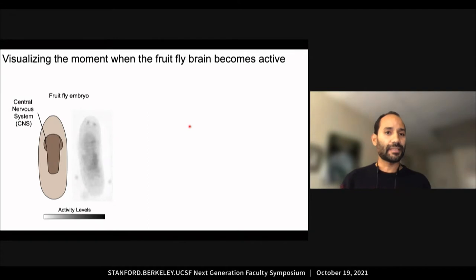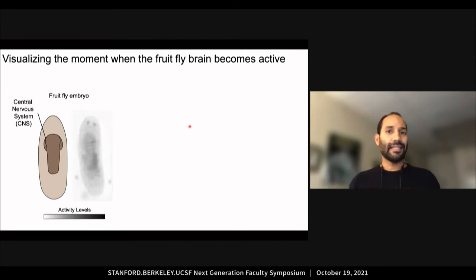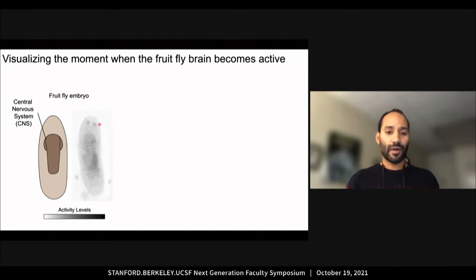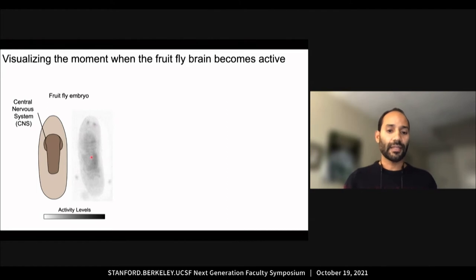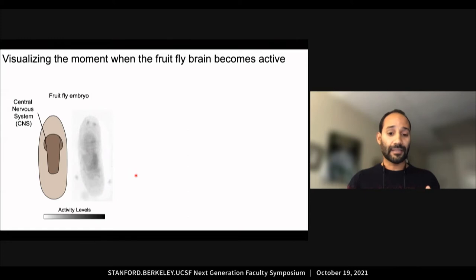We express a calcium sensor in the embryo to monitor neural activity. Here is the body wall, where the muscles and sensory neurons are located. In the middle is the nervous system, which will become active in a few seconds.